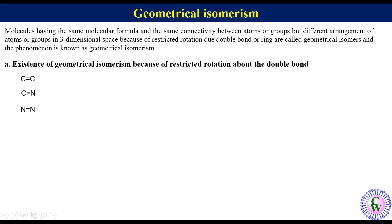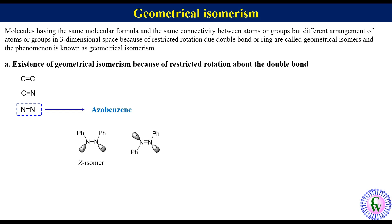Geometrical isomers can also arise due to restricted rotation about a nitrogen-nitrogen double bond. The example is azobenzene. In one isomer, the two phenyl groups are on the same side of the N=N double bond, called the Z isomer, while in the other, the two phenyl groups are on opposite sides, called the E isomer.